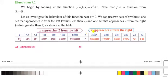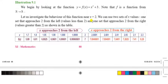Now as x approaches 2 from the right — values like 2.0001, 2.001, 2.01, 2.05, 2.1, 2.3 — we compute the corresponding function values. These values are very close to 2 from the right side, and we check what the function approaches from both the left and the right sides.